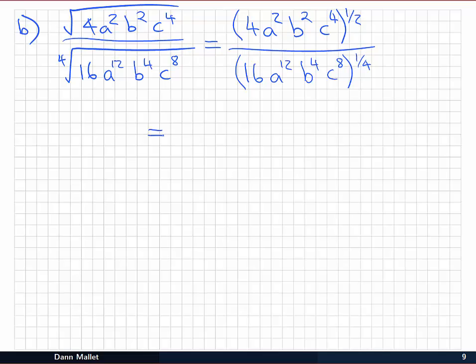Again I'll use my index laws. I'll expand the bracket out by multiplying each of the powers inside by 1/4, and on the top by 1/2. So we have 4 to the 1/2, a to the 2 times 1/2, b to the 2 times 1/2, c to the 4 times 1/2. On the bottom 16 to the 1/4, a to the 12 times 1/4, b to the 4 times 1/4, and c to the 8 times 1/4.